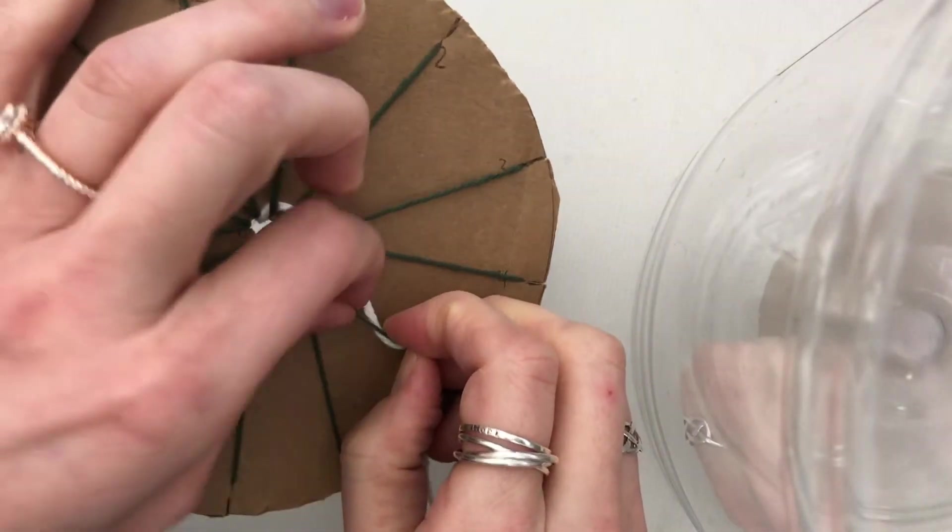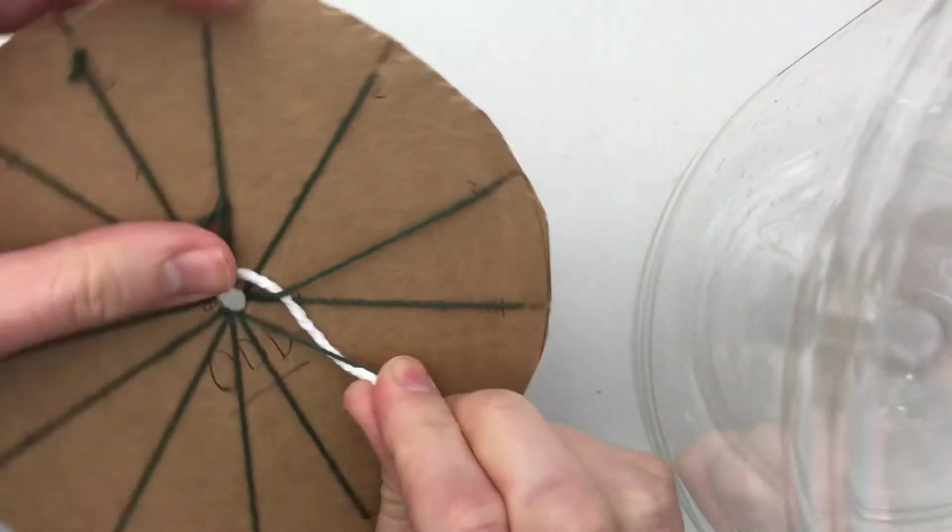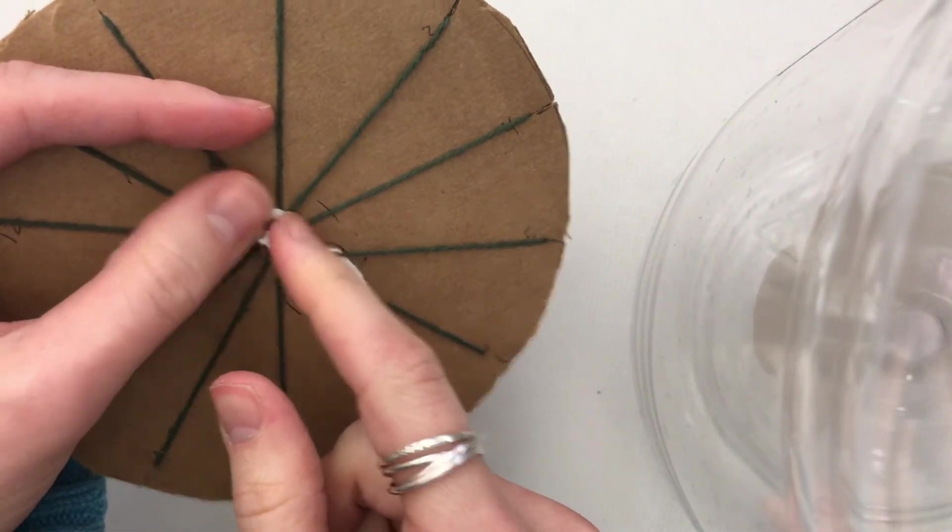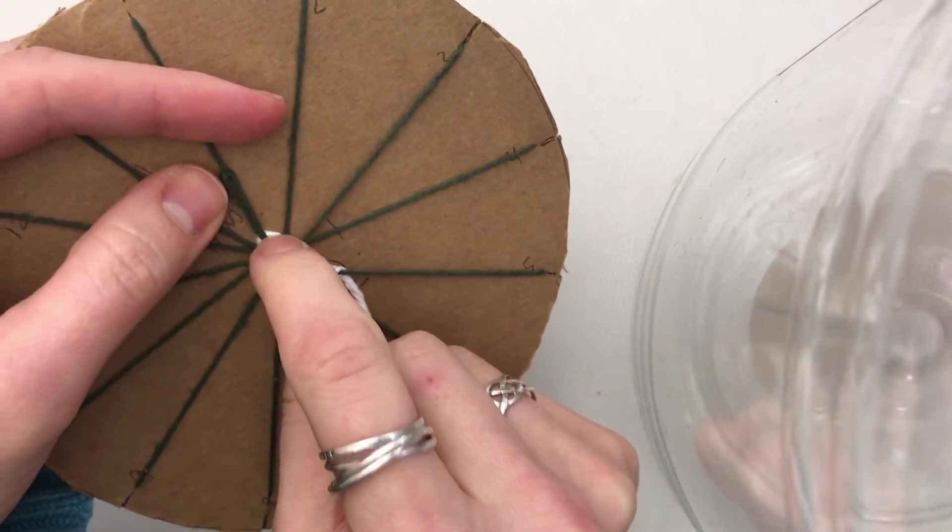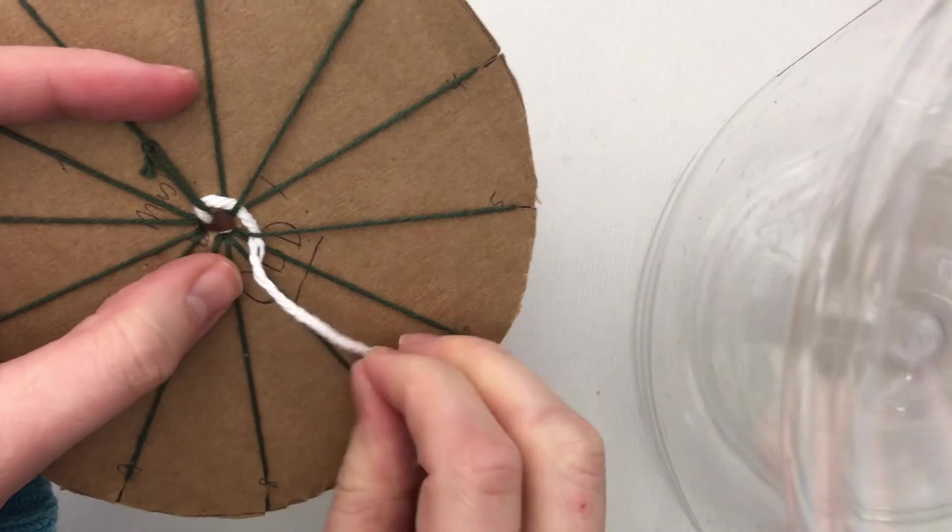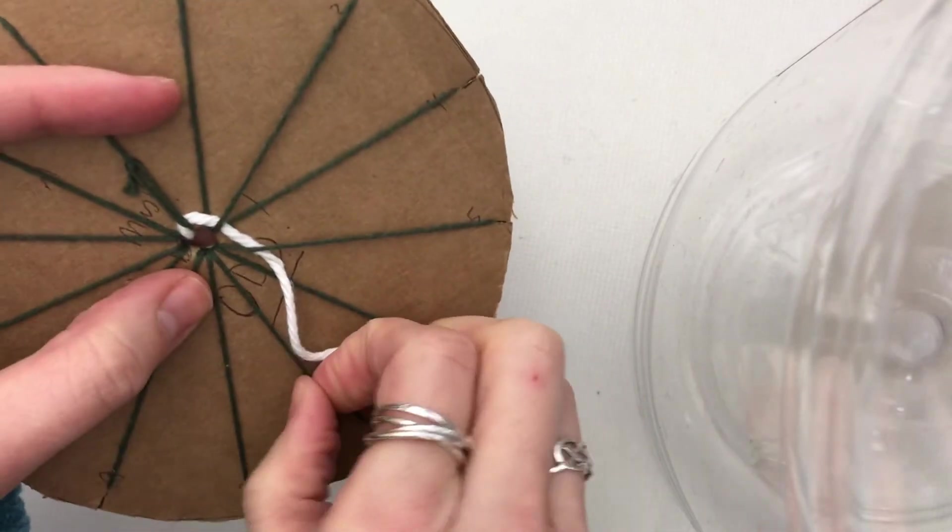And then just make sure my previous tail of my string goes tight against the circle, because I don't really want that hole to be super visible. So under, over, under number seven.